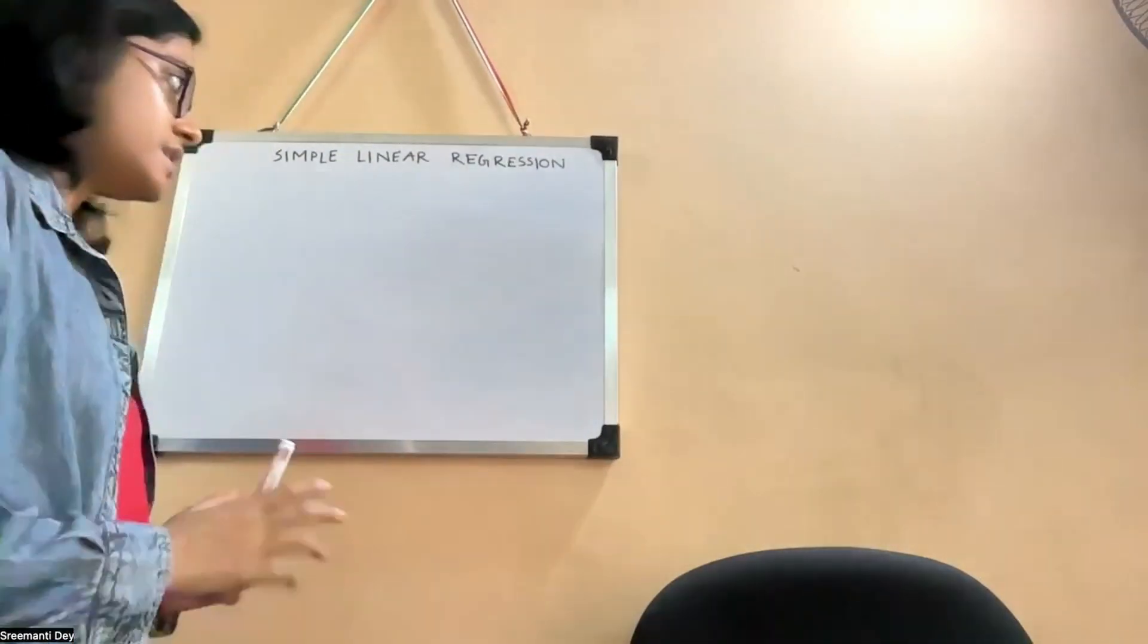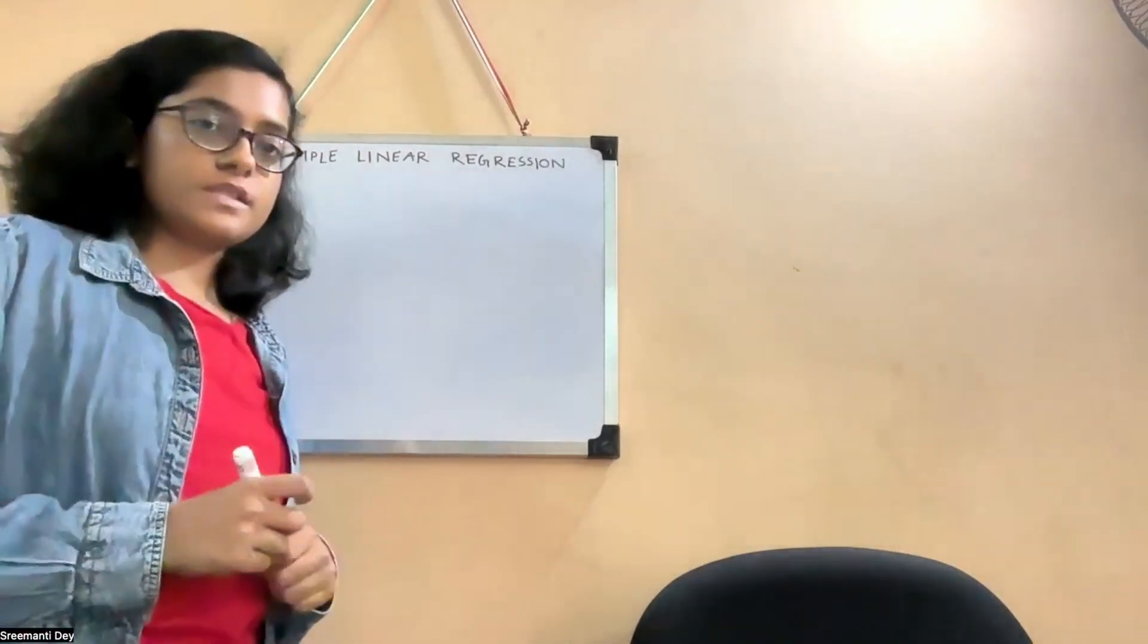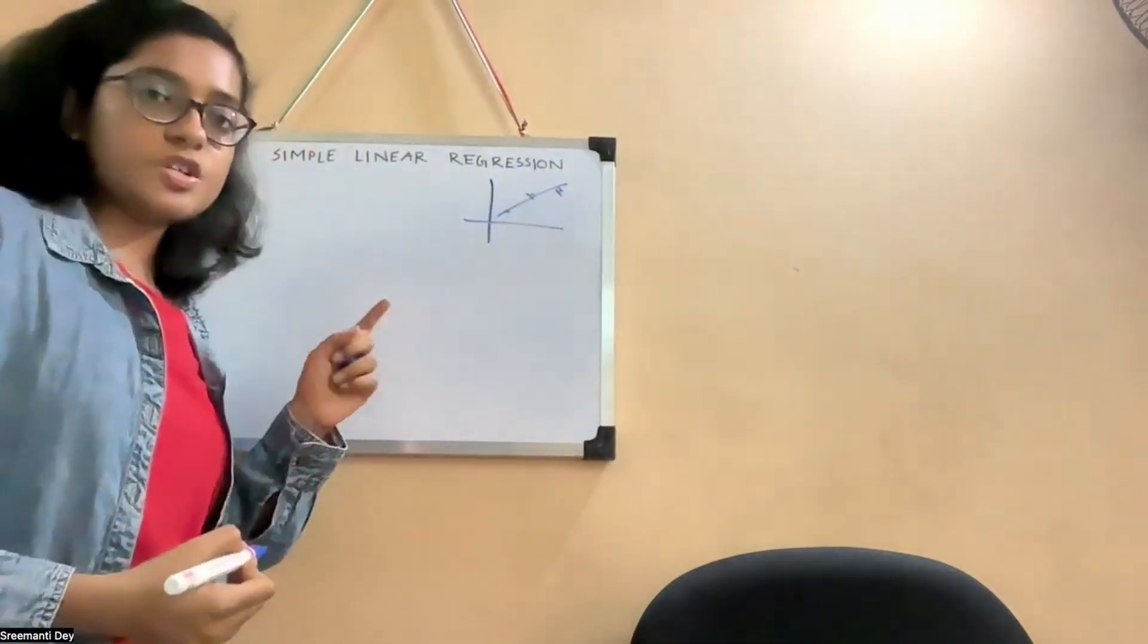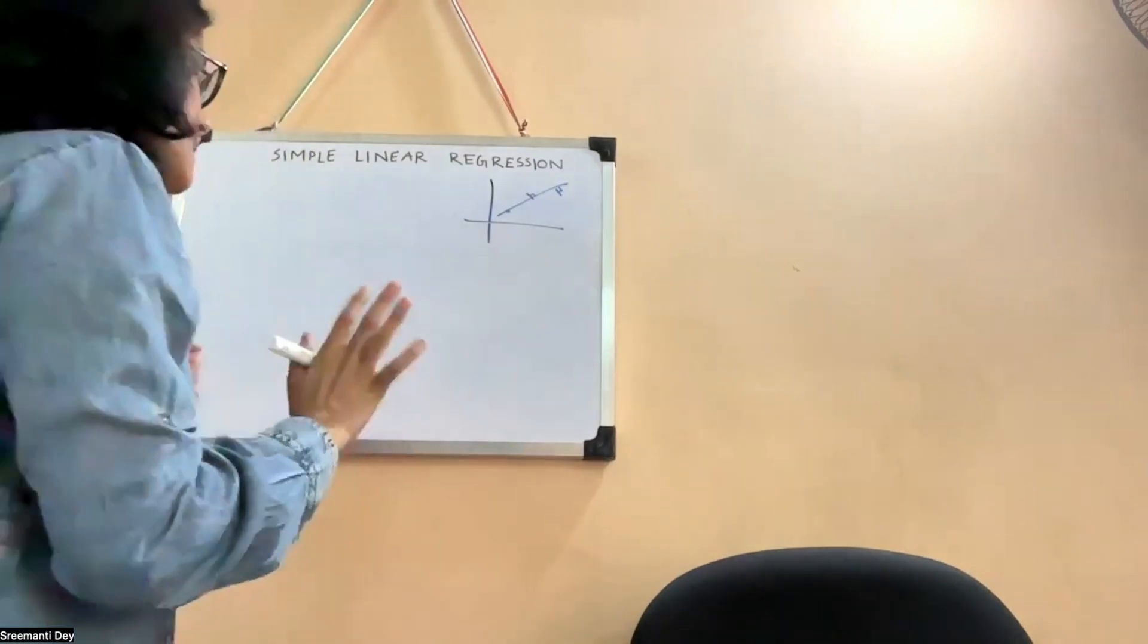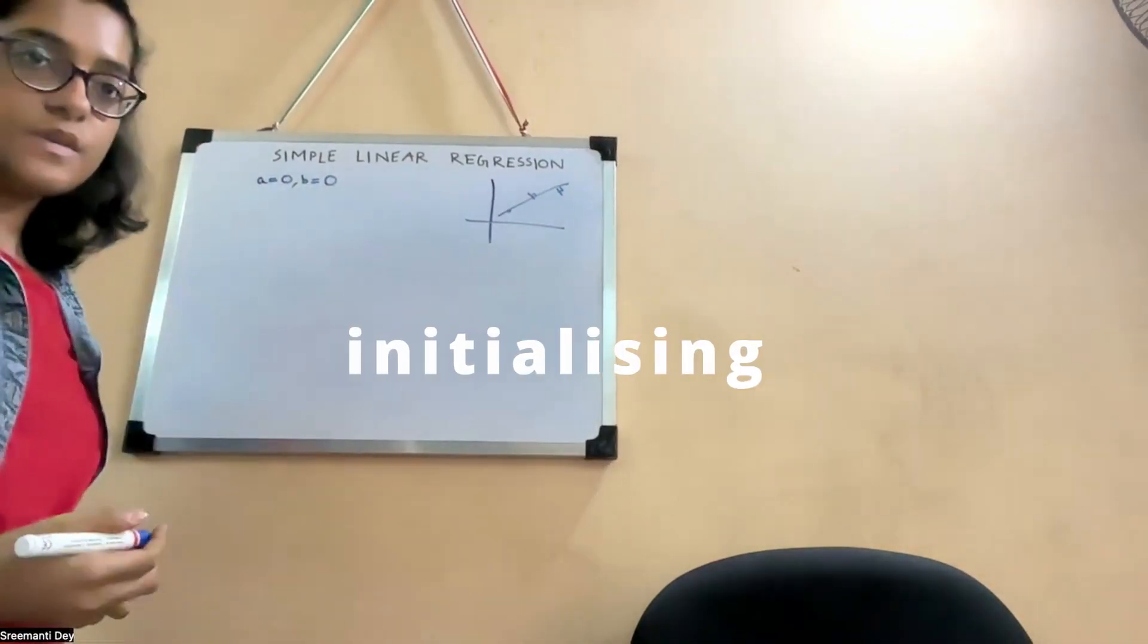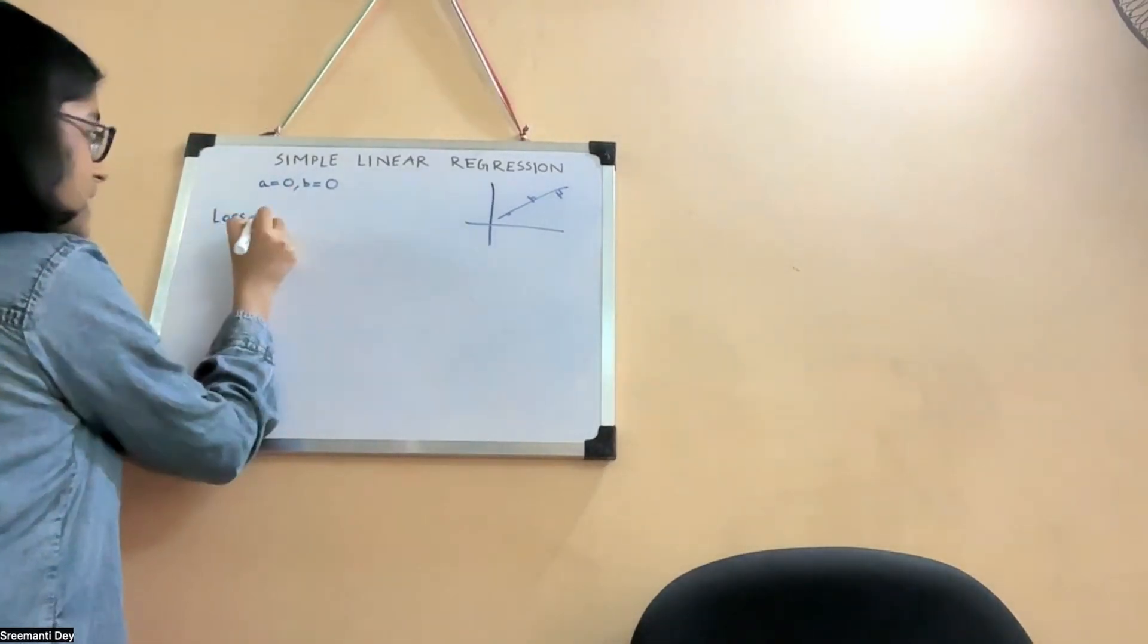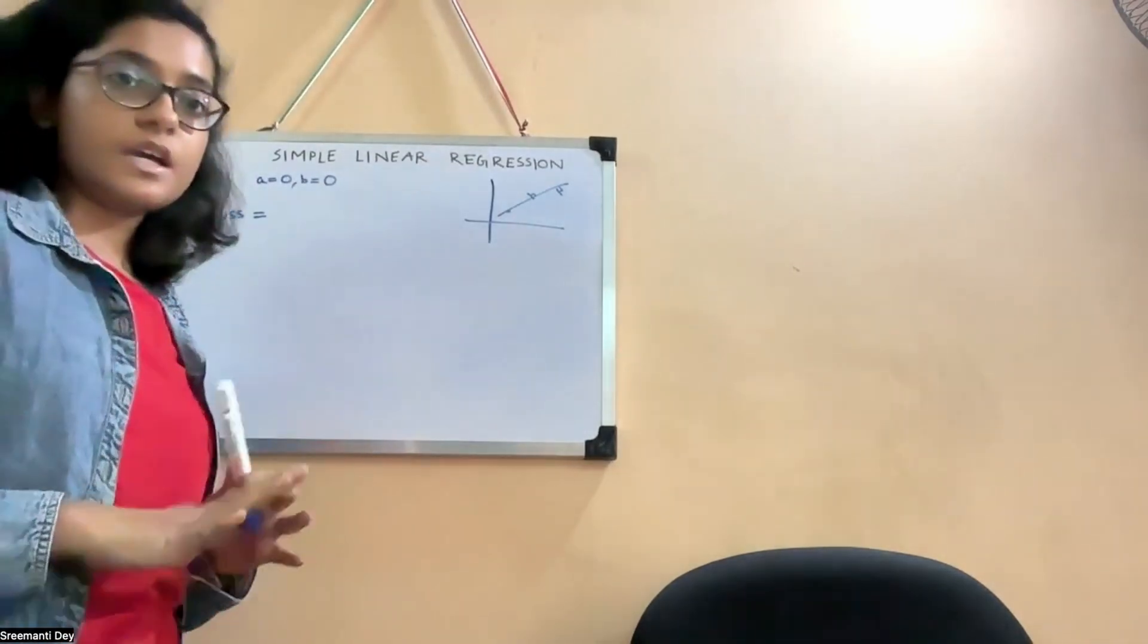Now the next thing that comes into the picture is how do we find the equation of this line? So first thing we need to do is basically get the loss. So what does the loss mean? These differences are the losses. We want to find an equation for these differences and then our target would be to minimize the loss so that we can find the equation of this line. The first thing that comes into play is initializing these weights.